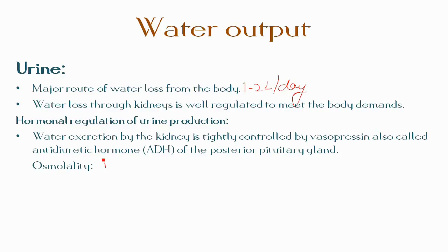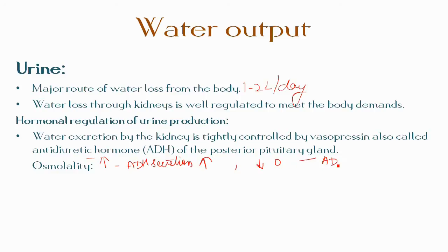An increase in plasma osmolality promotes ADH secretion, which leads to increased water reabsorption from the renal tubules and hence less urine output. On the other hand, a decrease in osmolality suppresses ADH secretion, resulting in reduced water reabsorption from the renal tubules and hence more urine output.